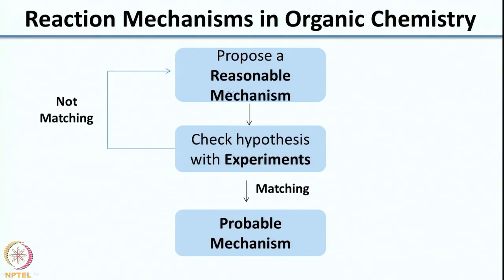Over the past 8 weeks, we have been looking at ways to propose a reasonable mechanism. Once you propose the mechanism, you check the hypothesis using experiments. If the experiments match, you can say this is the correct mechanism. If not, you need to go back, rewrite your mechanism, and check it again. It is a cycle — a loop useful in determining the probable mechanism.